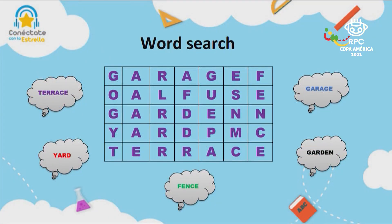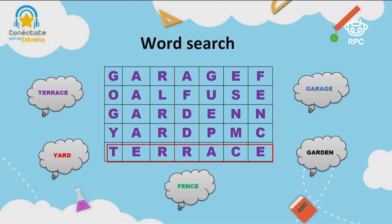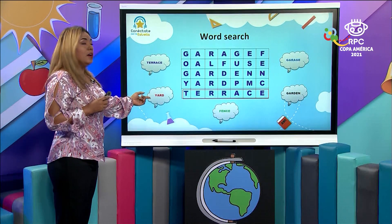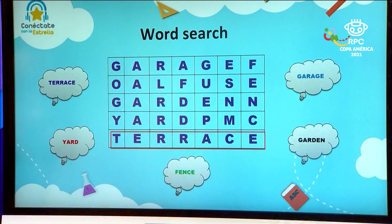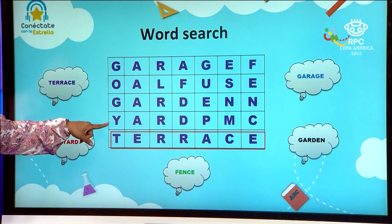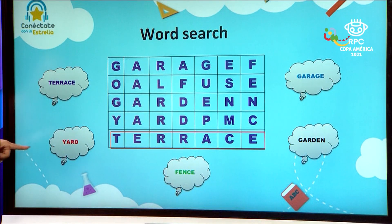So let's start with terrace. Where is terrace? Oh, here, I see. Terrace. Very good. Thank you so much for your help. Then we have yard. Where can I find yard? Oh, I see here. There is a Y. So this is yard.